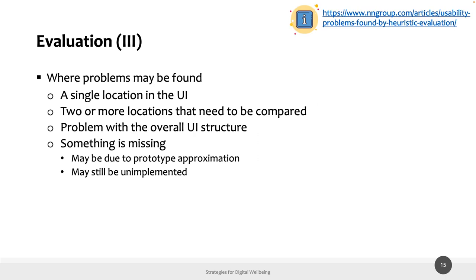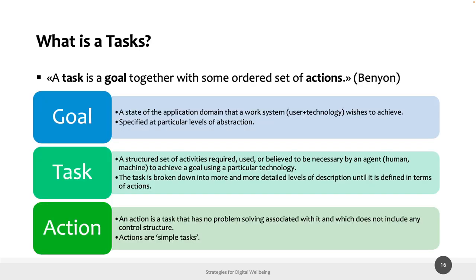Where problems may be found: this is mostly related to usability problems but probably applies also to our domain. Problems can be on a single location of the user interface — a button or a given functionality. A problem can also be related to the overall structure of the application, or something that is missing. You can really find different problems with different levels of severity.